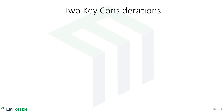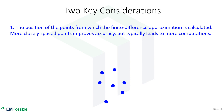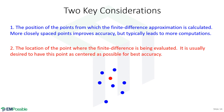To summarize: there are two key considerations with finite differences. First, the positions of the points we're calculating from — we'd like these to be as closely spaced as possible for greater accuracy. Second, the point where we're calculating the finite difference — we'd like it to be as centralized within our data as possible. Estimating a derivative far outside our data points is possible mathematically but undesirable. This is why a central finite difference, when we can use it, is always preferred. We'll go to great lengths in later lectures to ensure we're always using central finite differences.